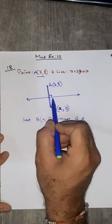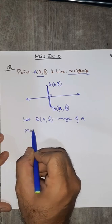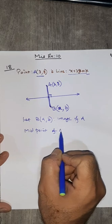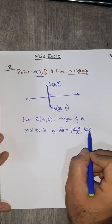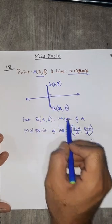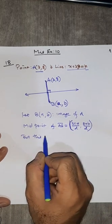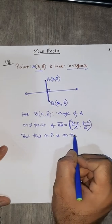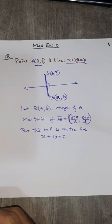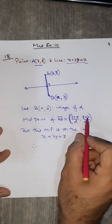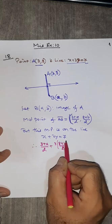Now, two concepts we are going to use. One is: the midpoint of AB will be on this line, so it will satisfy this equation. Let me find the midpoint of line segment AB, which will be (3+A)/2 comma (8+B)/2. This midpoint lies on the line x plus 3y equals 7, so it will satisfy this equation. In place of x you put (3+A)/2, in place of y you put (8+B)/2.